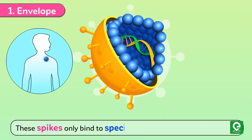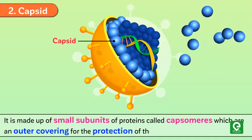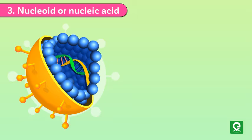Number two: capsid. It is made up of small subunits or proteins called capsomeres, which are an outer covering for the protection of the genetic material of a virus. Number three: nucleoid or nucleic acid — it contains the viral genetic information encoded as DNA or RNA.